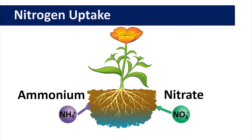Photosynthesis requires sunlight, carbon dioxide, and water to produce glucose. This simple sugar is a carbohydrate that combines with other sugars to form the plant structure and stores energy for future use.